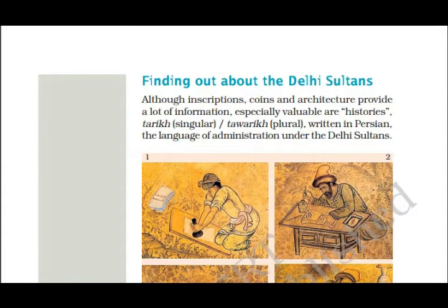The next topic is finding out about the Delhi Sultans. Although inscriptions, coins, and architecture provide a lot of information, the most important sources are 'tarik' (singular) and 'tavarik' (plural) — histories written in Persian, which was the language of administration under the Delhi Sultans.